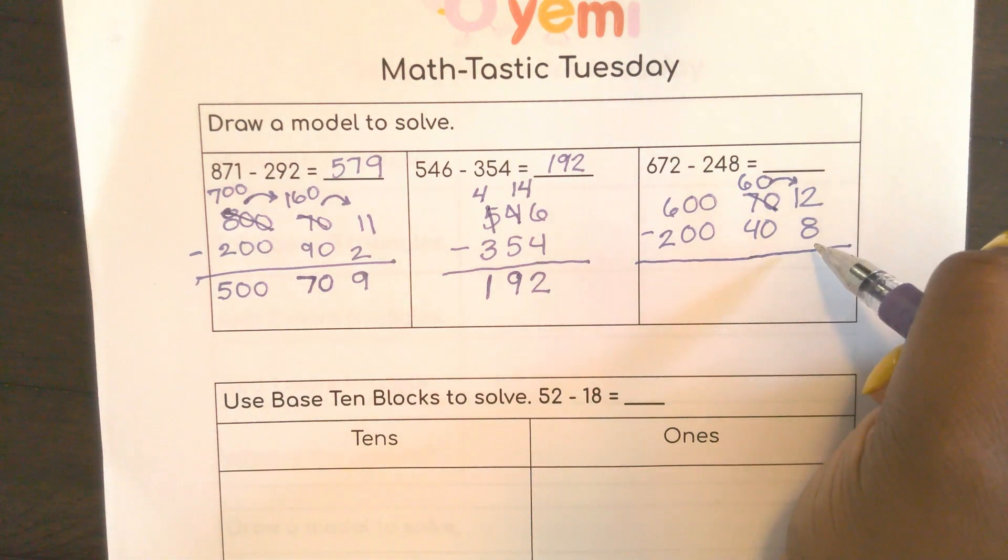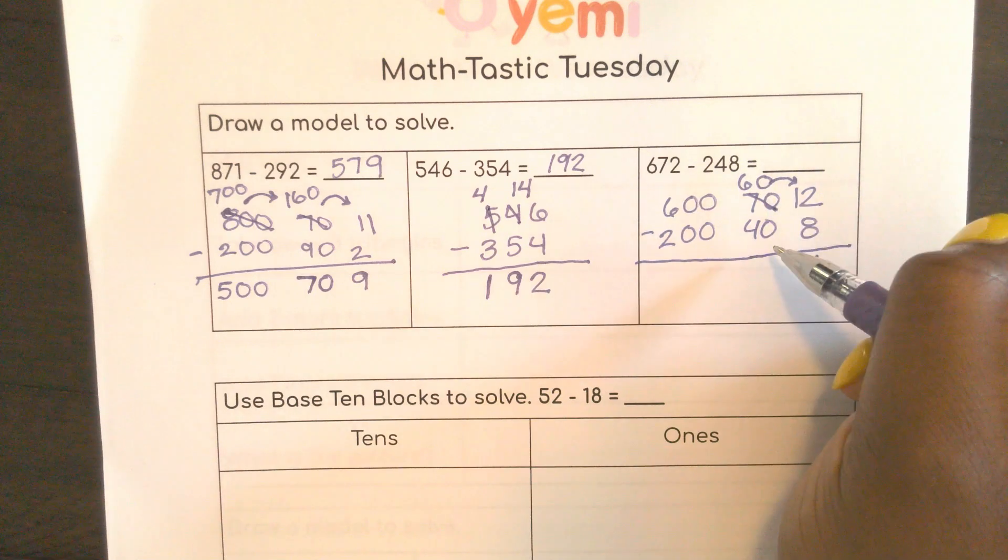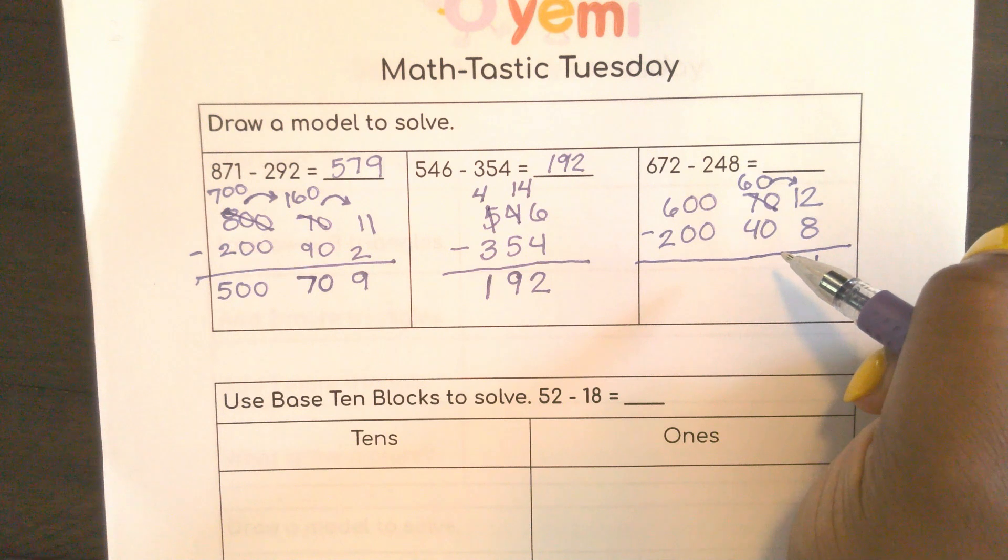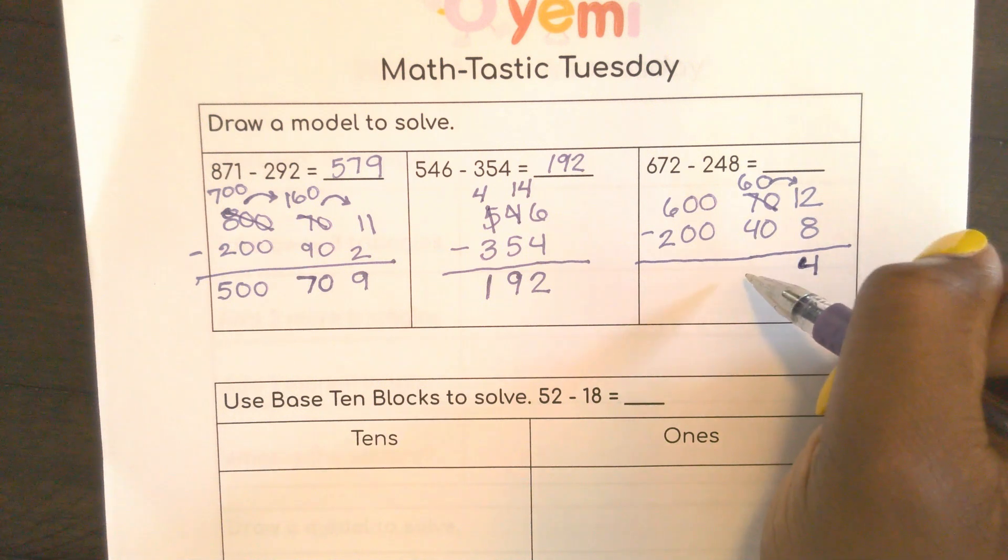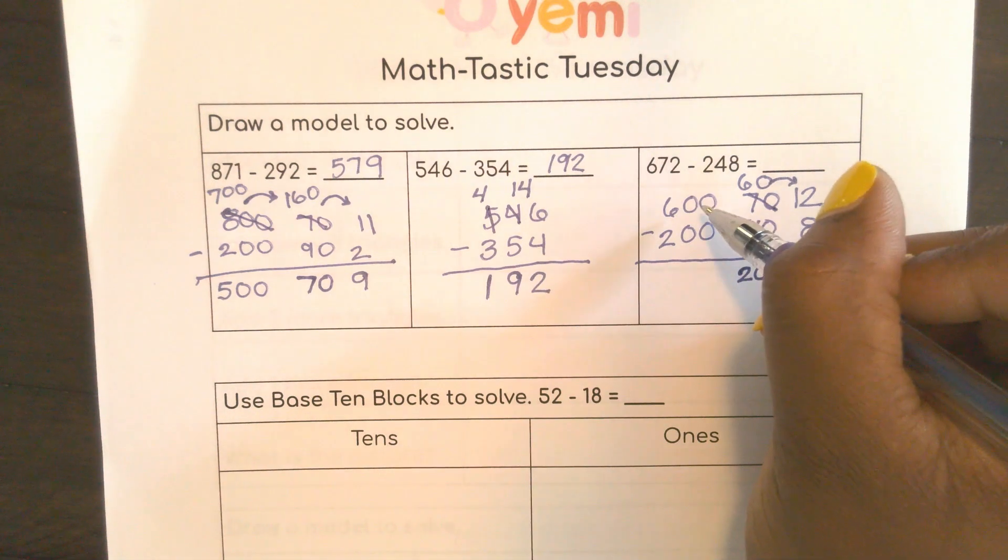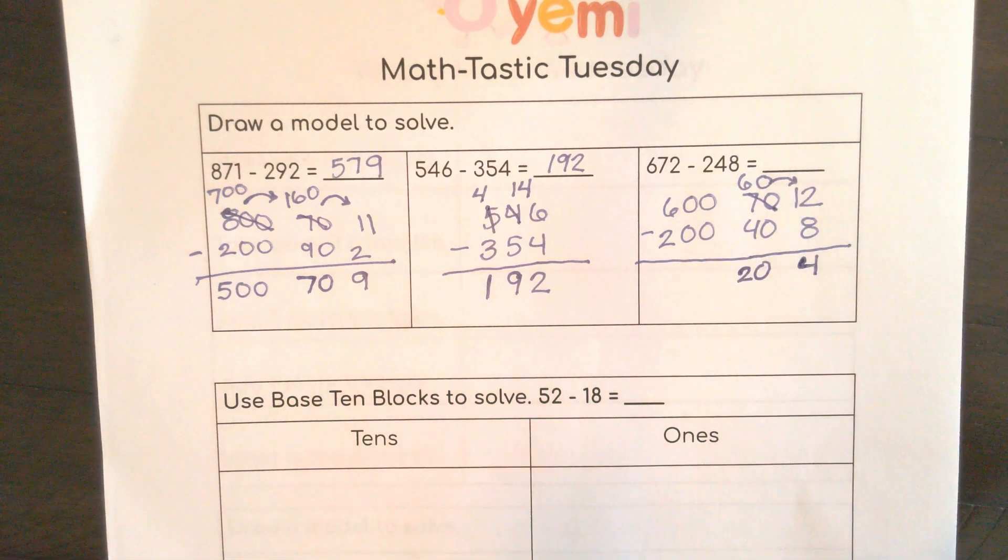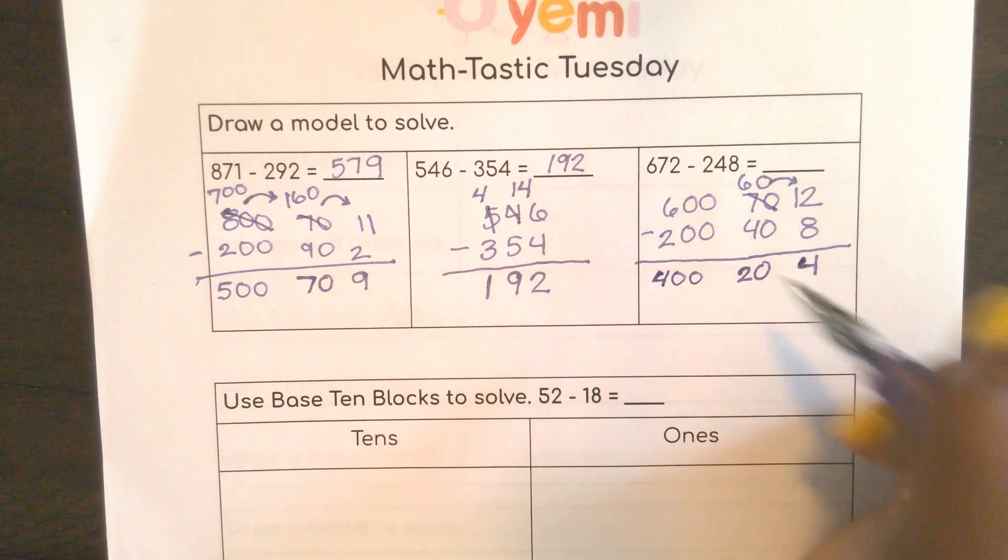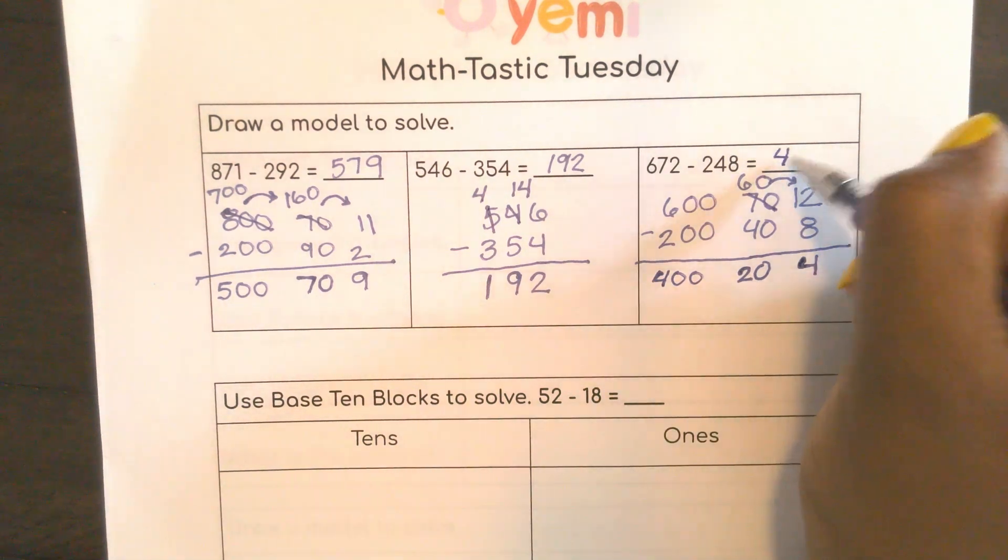So here 12 minus 8. 8 and 2 will give me 10. I need two more, 4. So 8 plus 4 is 12. 60 minus 40. 6 tens minus 4 tens would give me 2 tens. I didn't have to regroup. So I can just do 600 minus 200, which is 400. So my answer here is 424.